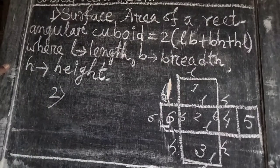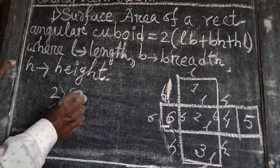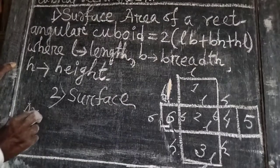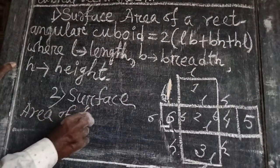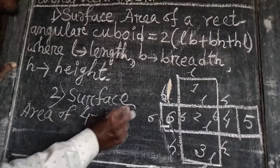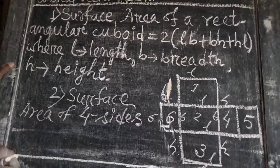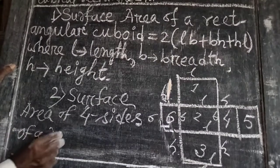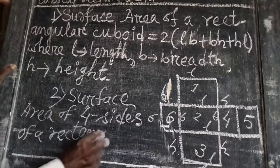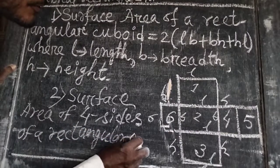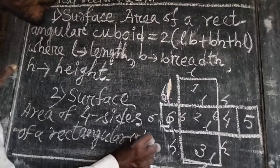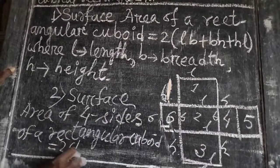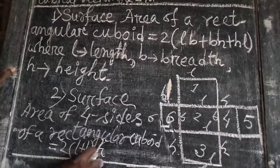Formula 2: the surface area of 4 sides of a rectangular cuboid is equal to 2 into (L plus B) into H.